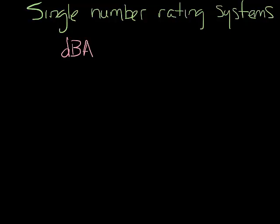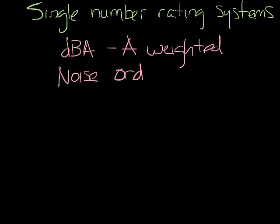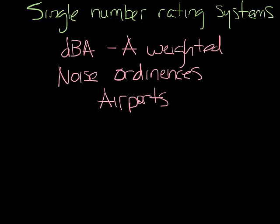DBA is probably one of the most common single number rating systems. DBA is basically a weighted scale that gives less weight to the very high and very low frequencies. It's typically used for noise conservation and outdoor noise evaluation. Think things like noise ordinances for airports. Many inexpensive sound meters give DBA readings.